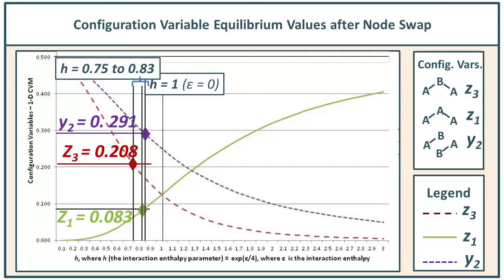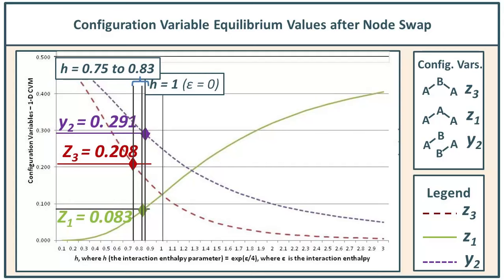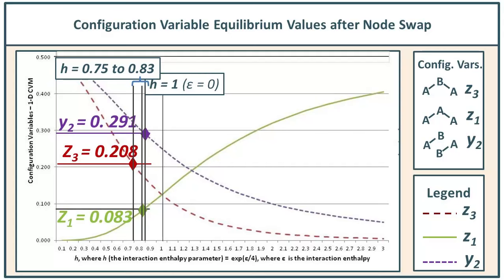Returning to our table of observed configuration variable values and mapping them onto the analytic graph: we have three different vertical lines corresponding to the h values for each of the three configuration variables. At the far left, with a red dashed line, z3 equals 0.208. Somewhat more to the middle, in green, z1 equals 0.083. And on the far right, in purple with a dashed line, y2 equals 0.291.